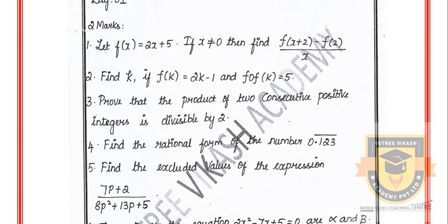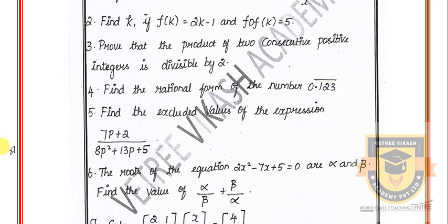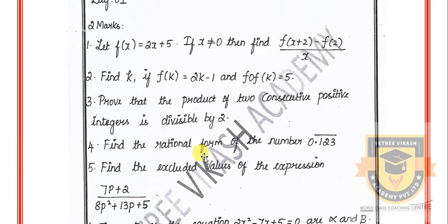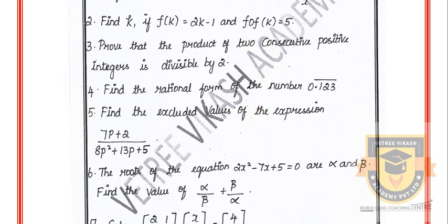Let the function f of x equal 2x plus 5, if x is not equal to 0. Then find f of x plus 2 minus x, and f of 2 by x. Find k if f of k is equal to 2k minus 1 and f of f of k is equal to 5. Prove that the product of two consecutive positive integers is divisible by 2.